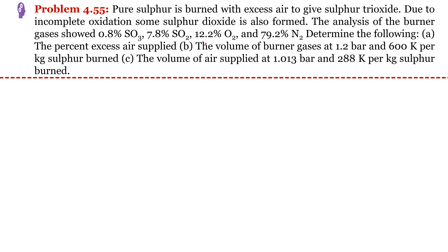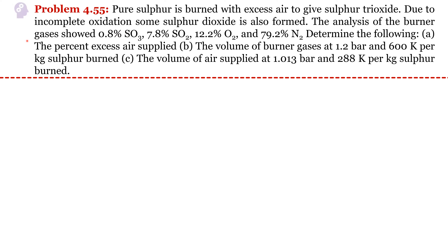In this problem, the composition of the burner gases is given. We can assume the total moles of burner gases so that the moles of SO3, SO2, O2, and N2 in the leaving gas become known. Then we can do back calculations to find out what were the required amounts of sulfur and oxygen.